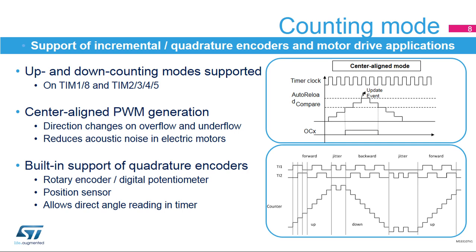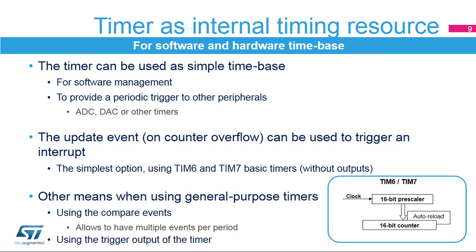The timer counter thus directly holds the angular position of the motor or the potentiometer. The simplest use case for a timer is to provide an internal time base, commonly used by software routines either to provide periodic interrupts or single-shot timeout protection.